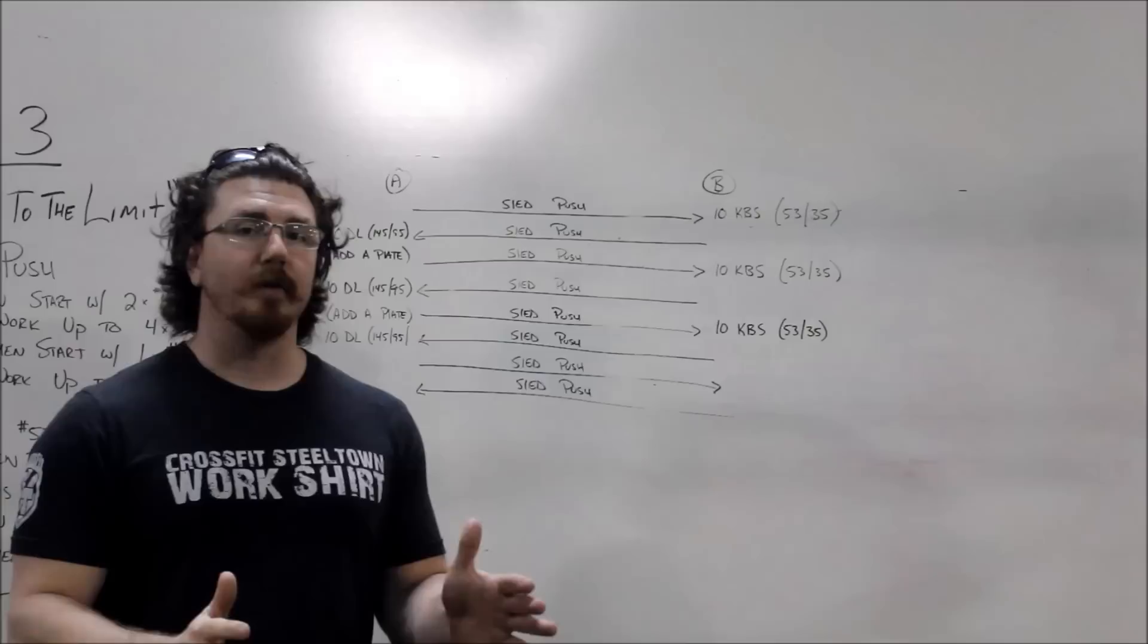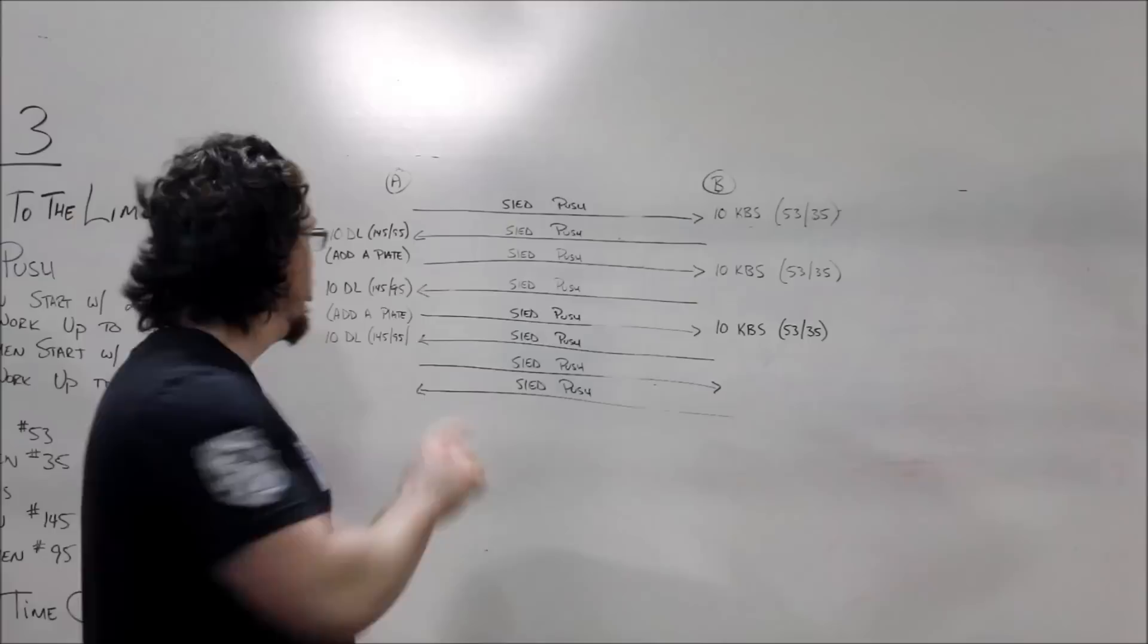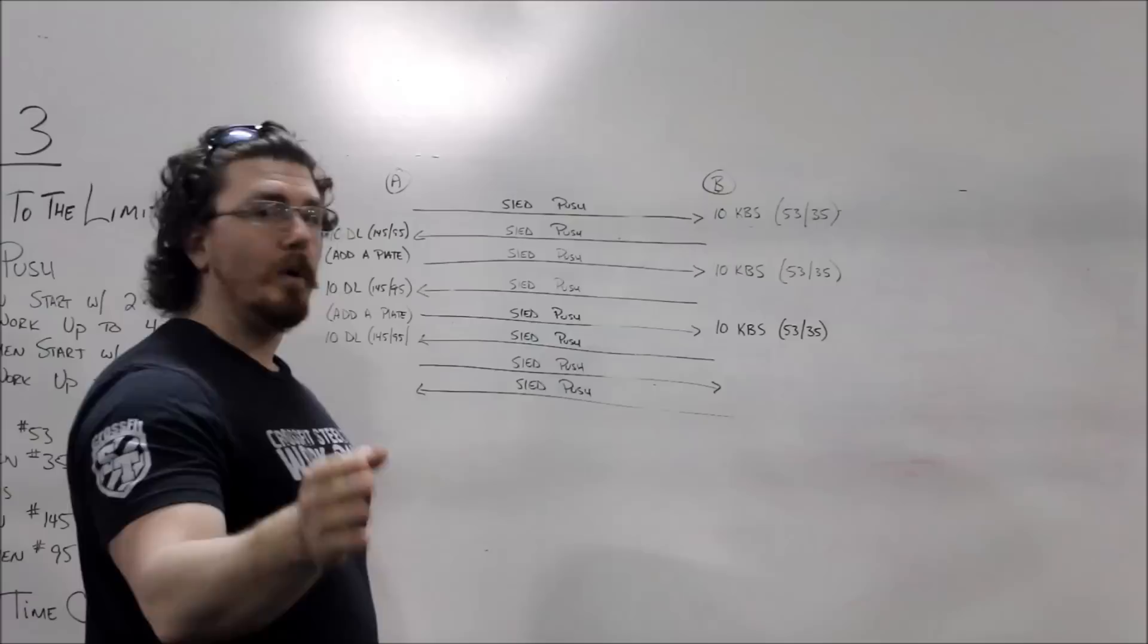Now you can do either task first. You can do the deadlifts first, or you can put the plate on the sled. It's completely up to you how you do that. Once both tasks are complete, jump back on the sled, push the sled all the way down, cross the line. Cross the line, you do ten more kettlebell swings.